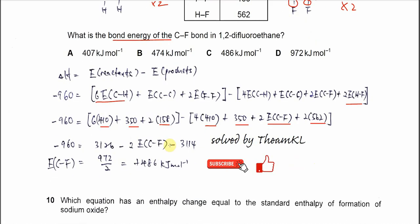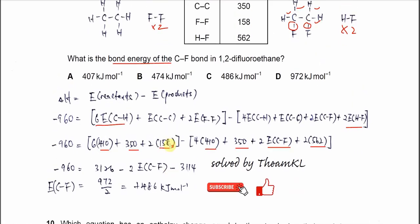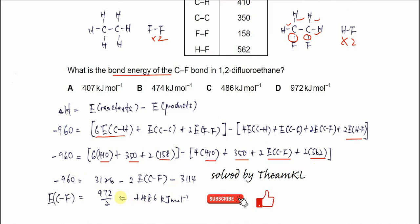Rearrange, and after that you get the answer which is 972 over 2. So you get positive 486 kilojoules per mole. Answer is C. That's all, thank you.